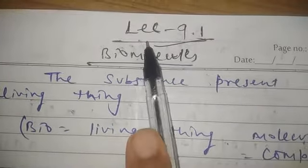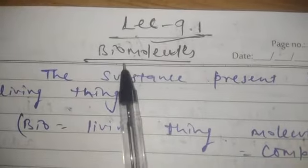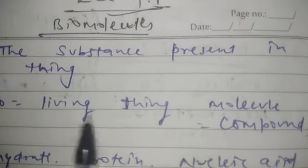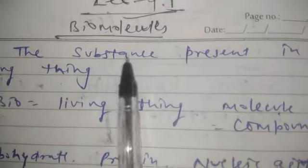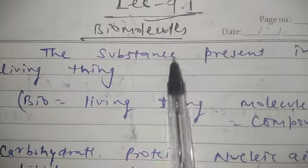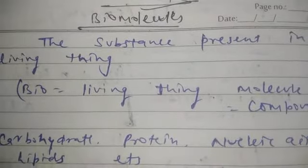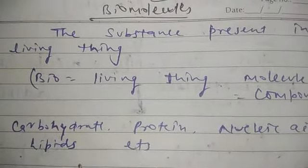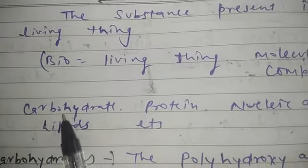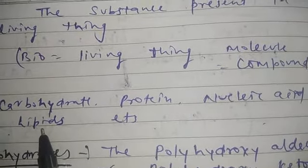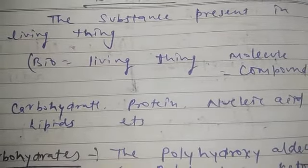Hello students, this is lecture number 9.1 and the topic name is biomolecules. Biomolecules kya hota hai? Bio means living and things means molecule ya compound. The substance present in living things is called biomolecules. Our body is made of carbohydrate, protein, nucleic acid, fats, lipids, enzymes, etc. These are biomolecules.